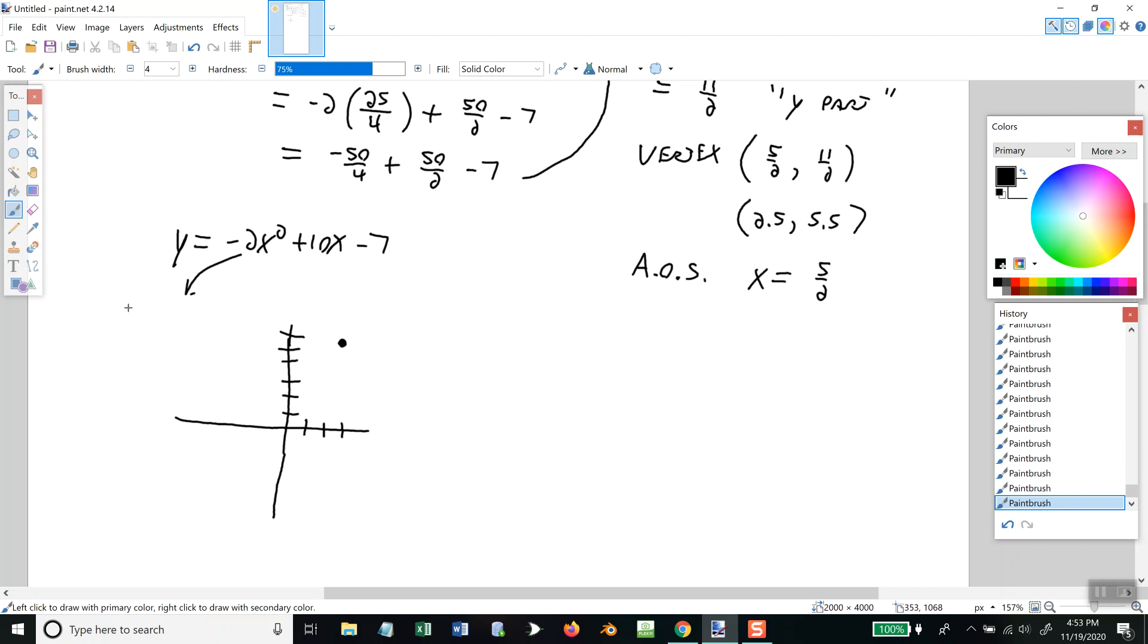So, I'll really focus on that 2.5 and 5.5. Eyes aren't very good. Looks like that. Now, this right here, since A is negative, that means my graph opens down. That helps me, because I know it opens down like this.